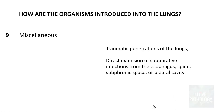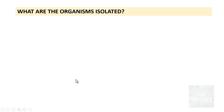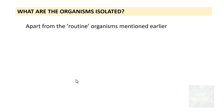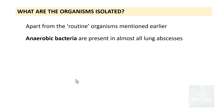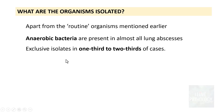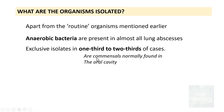Other causes include direct injury to the lung, particularly traumatic penetrations of the lung parenchyma, and direct extension of suppurative infections involving the esophagus, spine, subphrenic space, or even the pleural cavity. Importantly, anaerobic bacteria are present in almost all lung abscesses and can be the exclusive isolates in up to one-third to two-thirds of cases. The source of these anaerobic bacteria is the oral cavity, where they are normal commensals.